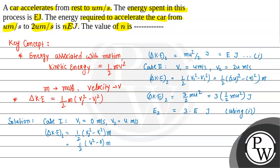So if we compare this with what was given — that the energy in the second case is N times E — the value of N will be 3. Hence the value of N is equal to 3. This is the final answer for the given question. We can fill in the blank that the value of N is 3. I hope you understood the solution. Thank you.